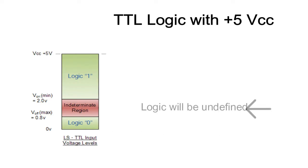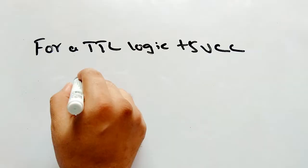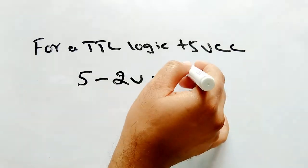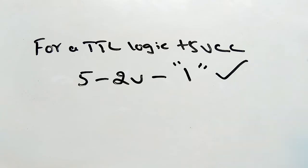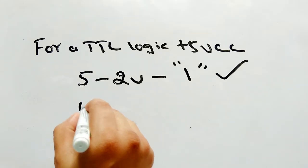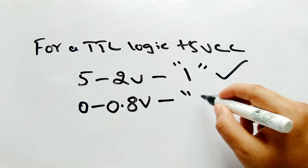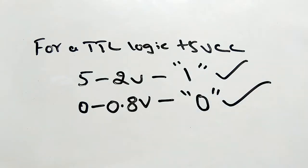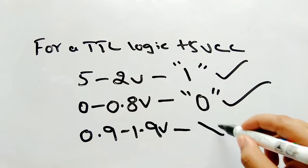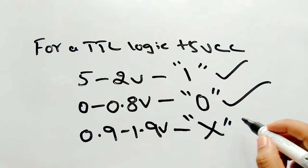And in between lies the pitfall. If the input voltage lies between 0.8 to 2 volts, then the input will go into undefined state and the output will be unpredictable in nature. So this is the region we want to avoid while designing our circuit. To summarize: input voltage 5 volts to 2 volts will give logic 1 and this is good. 0 to 0.8 volts will give logic 0 and that's great. 0.9 to 1.9 volts will give undefined state and it should be definitely avoided.